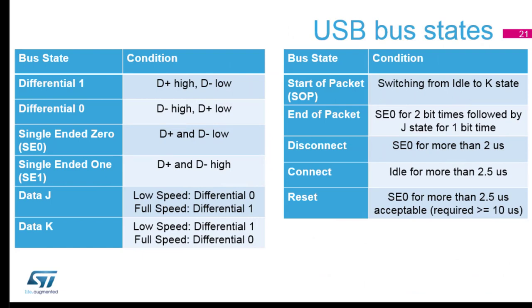Don't be overwhelmed by the state table — you can't memorize it immediately. The key point is that we have J state and K state. These states represent the differential line levels resulting from encoding. They are swapped between low speed and full speed: a J state in low speed is a differential zero, while in full speed it is a differential one. Keep this in mind as it explains how the protocol works.